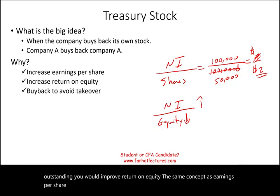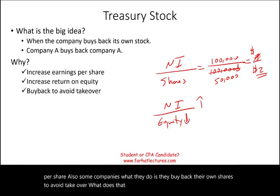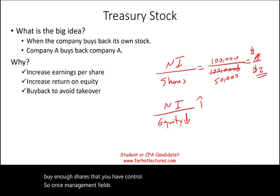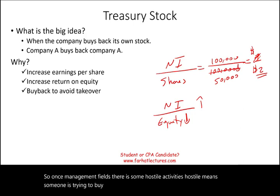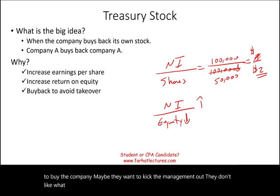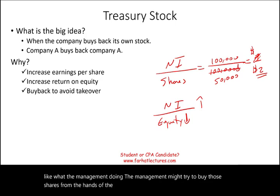Some companies buy back their own shares to avoid a takeover. To take over a company, you have to buy enough shares to gain control. When management feels there is hostile activity — someone trying to buy the company and perhaps remove management — they may buy those shares from the hostile shareholders.